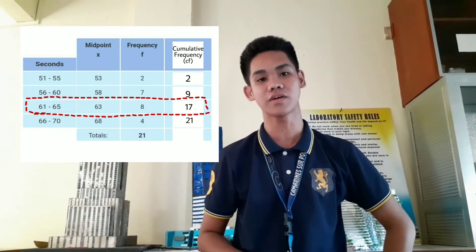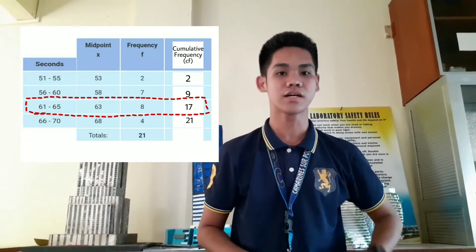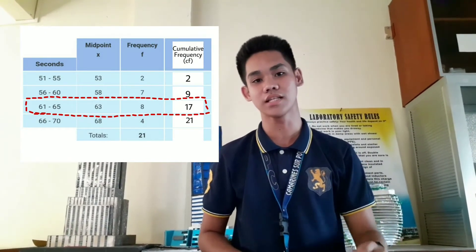How to find the median for grouped data? The median value in our case is the 11th value, which falls in the class interval of 61 to 65. We call it 61 to 65, but it includes the values from 60.5 to 65.5. The values are measured as whole numbers, so the real boundary of 60.5 is recorded as 61, and 64.5 is recorded as 65. So let's have the formula for finding the median.